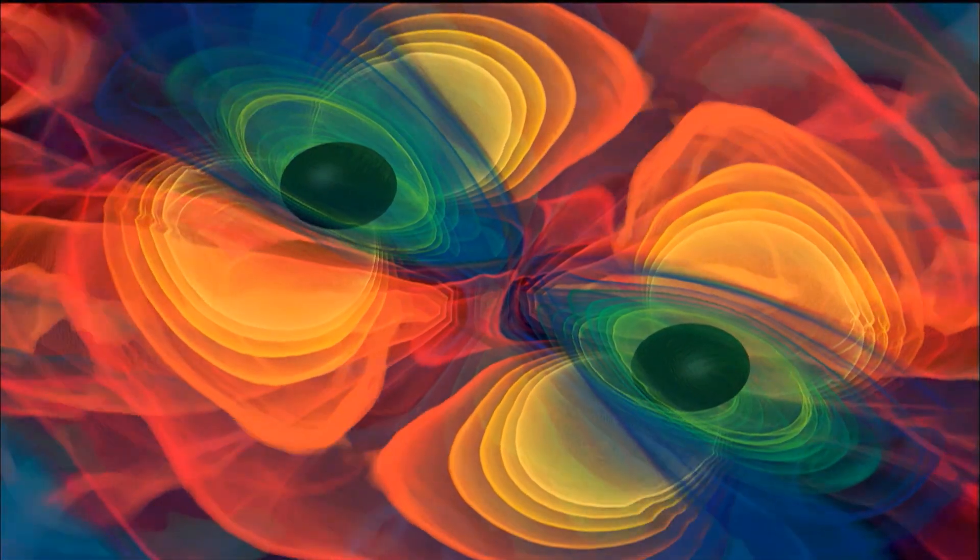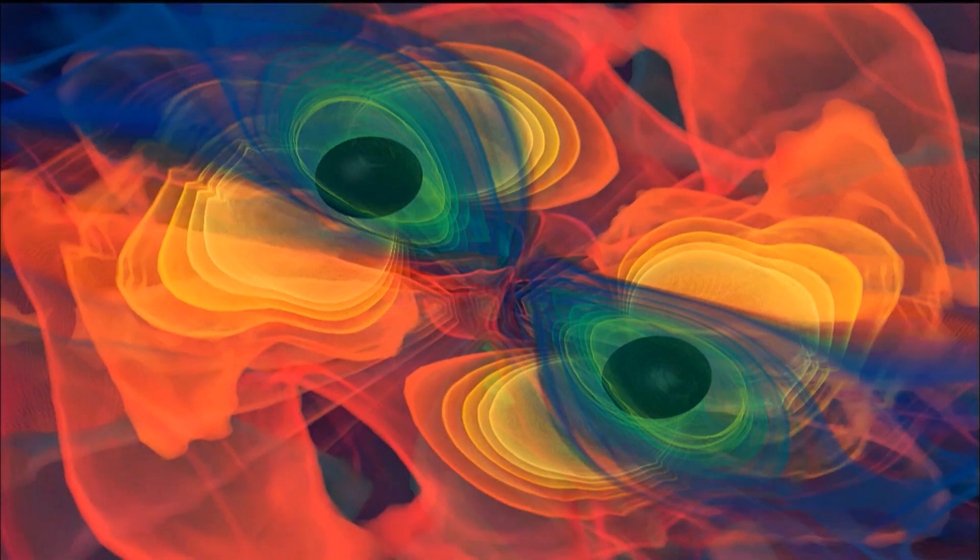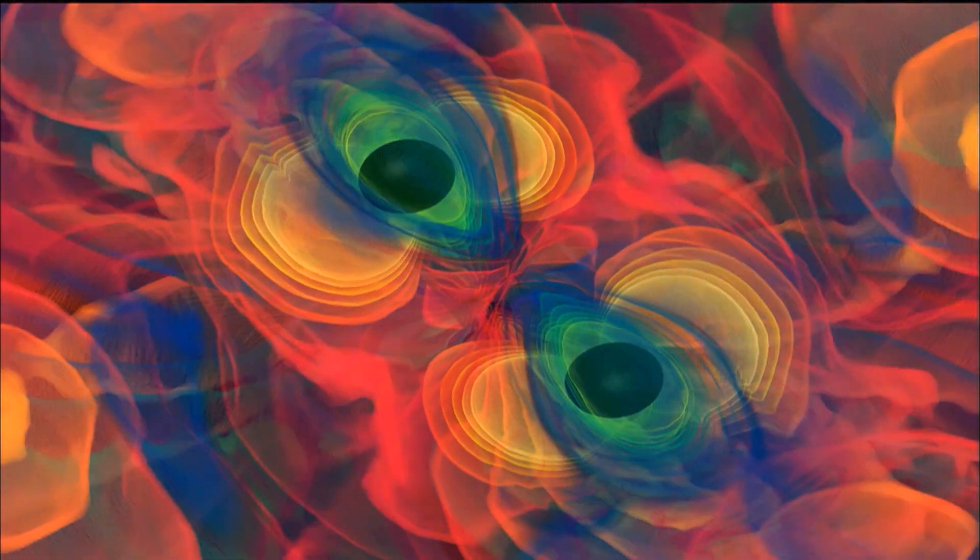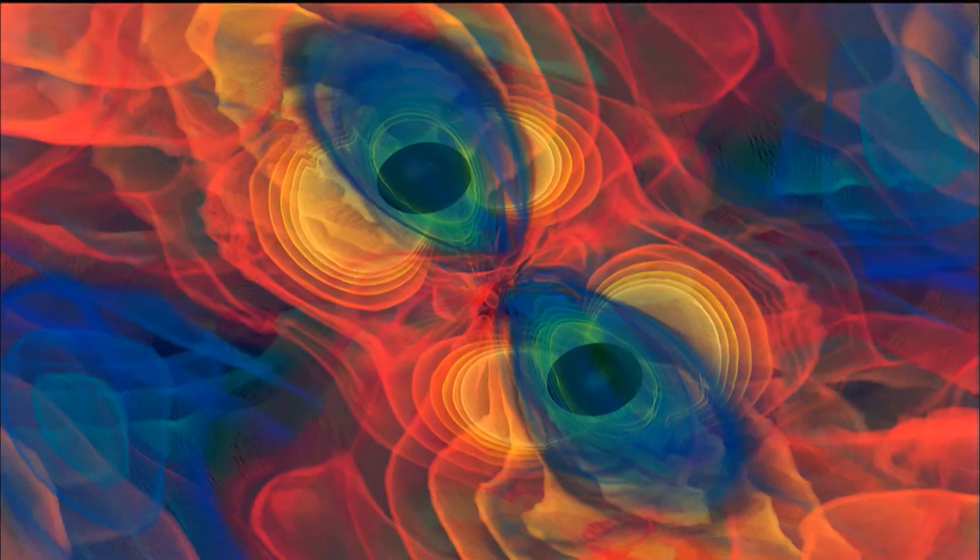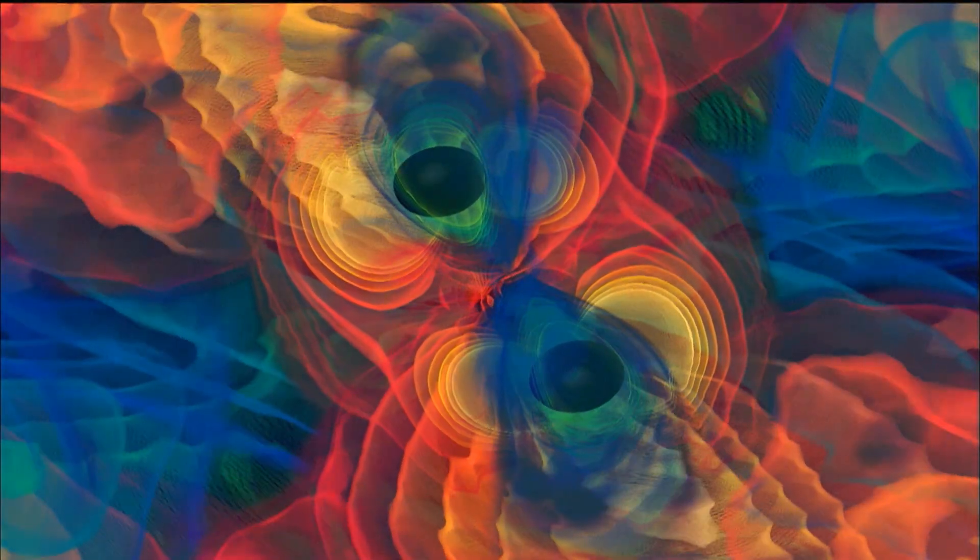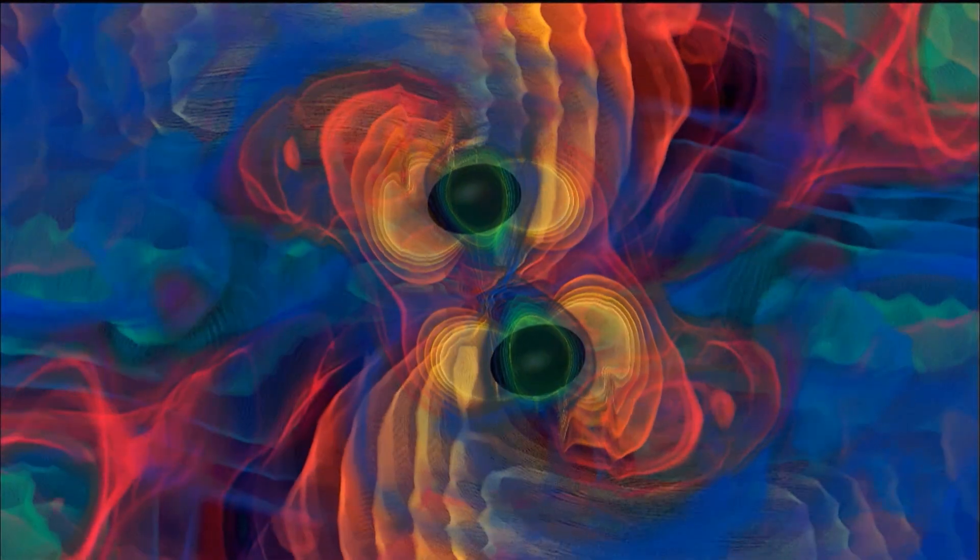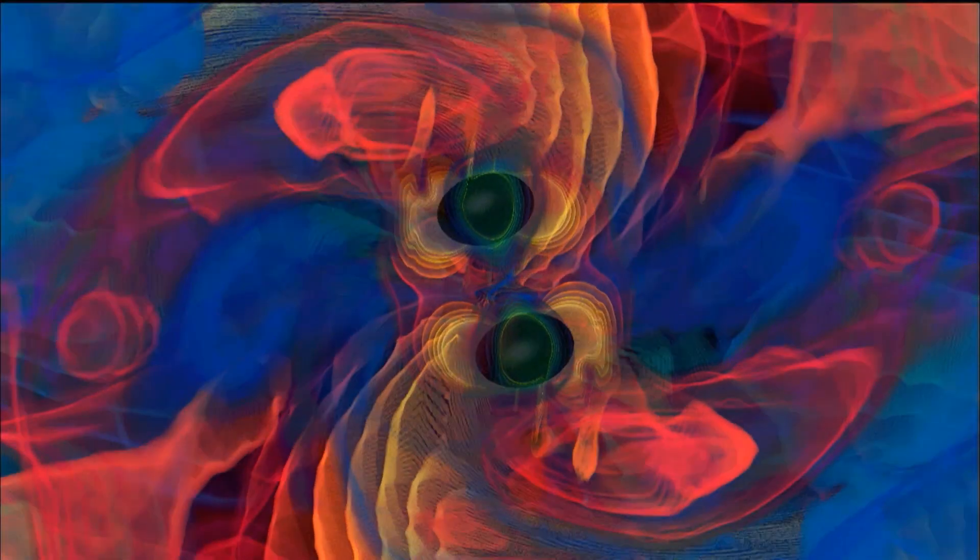This simulation shows what happens. As two black holes get close, they turn space into a turbulent sea of gravity waves. These waves have the effect of carrying energy away from the orbit itself. That allows the pair to draw each other in and merge into one.